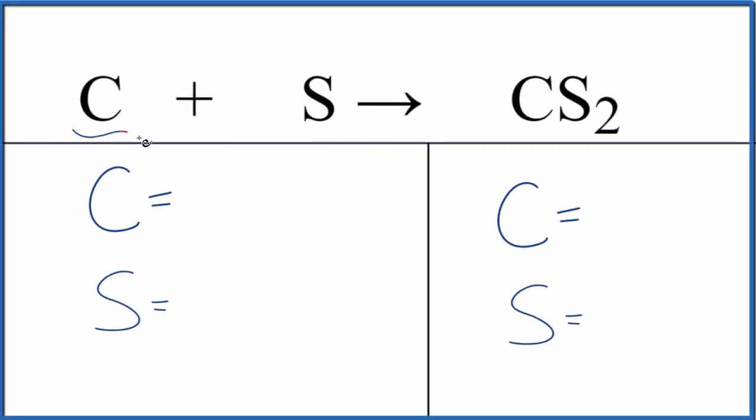Let's balance the equation C plus S gives us CS2. We have carbon plus sulfur and we get carbon disulfide. This reaction would take place pretty warm, 800 to 1000 degrees Celsius.